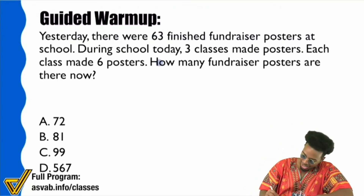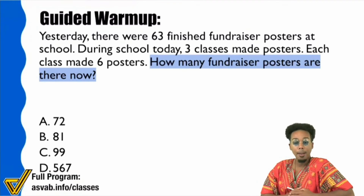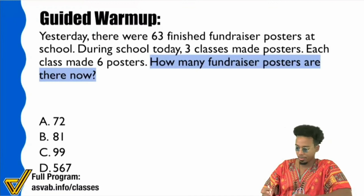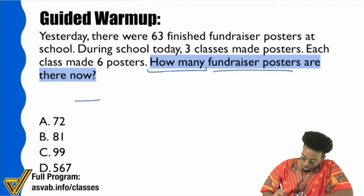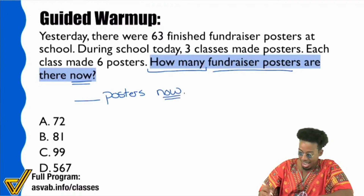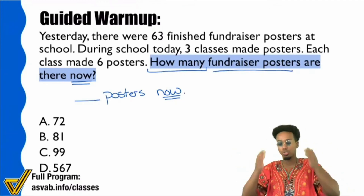Students are suggesting: total fundraiser posters, how many posters, how many fundraisers left, how many total, how much fundraisers are there now. It sounds like not everybody has a total grip on the question, so let's read it together. Right here it says, 'How many fundraiser posters are there now?' That's one sentence. When you see 'how many' and 'fundraiser posters,' we're just looking for a blank number of posters — and 'now' is a big keyword. So in shorthand: we're looking for the number of posters there are now.